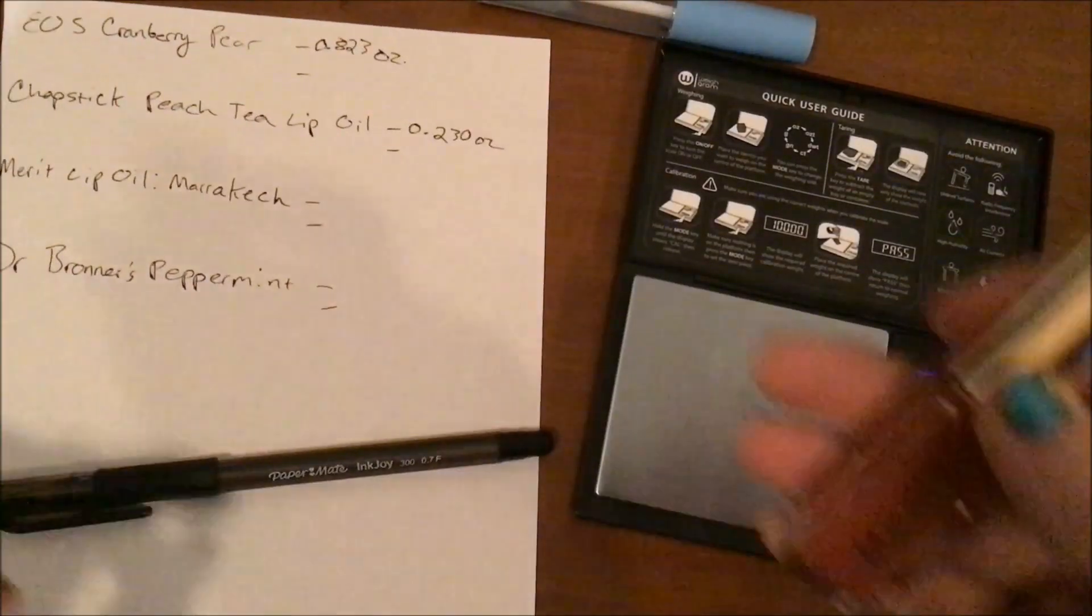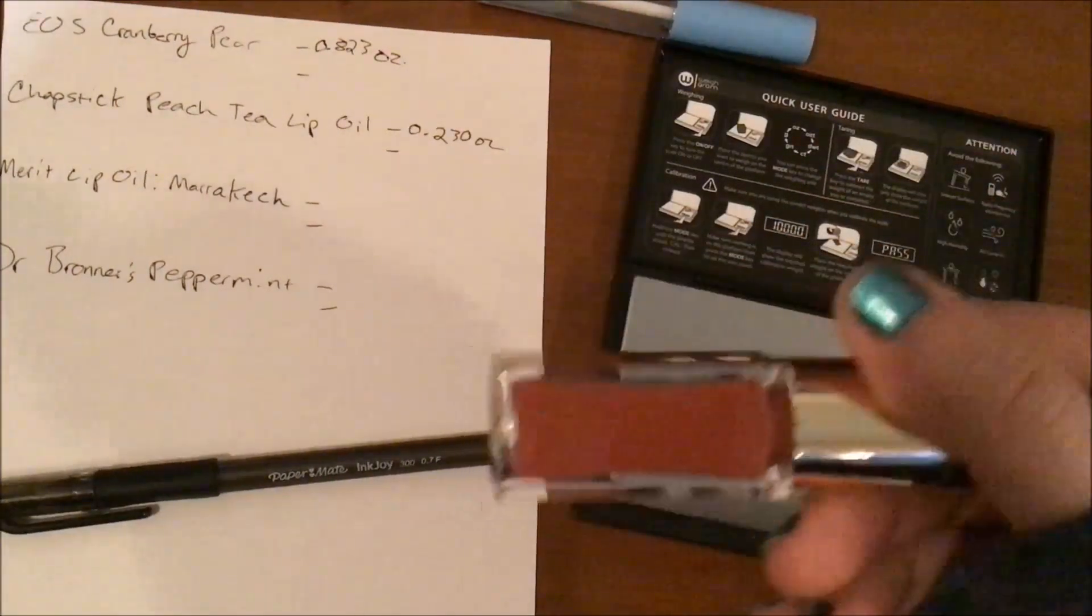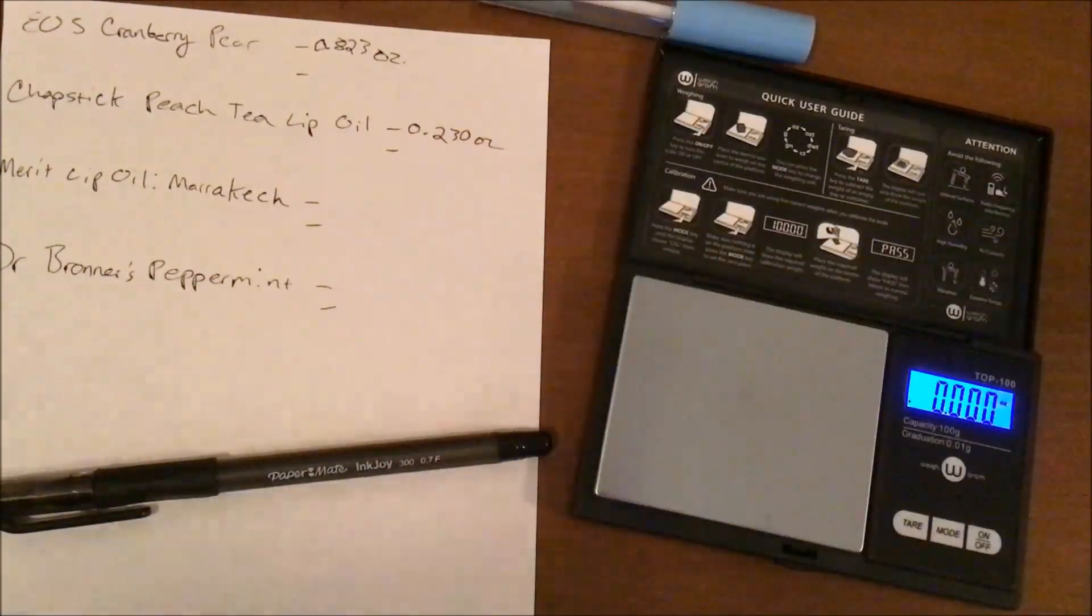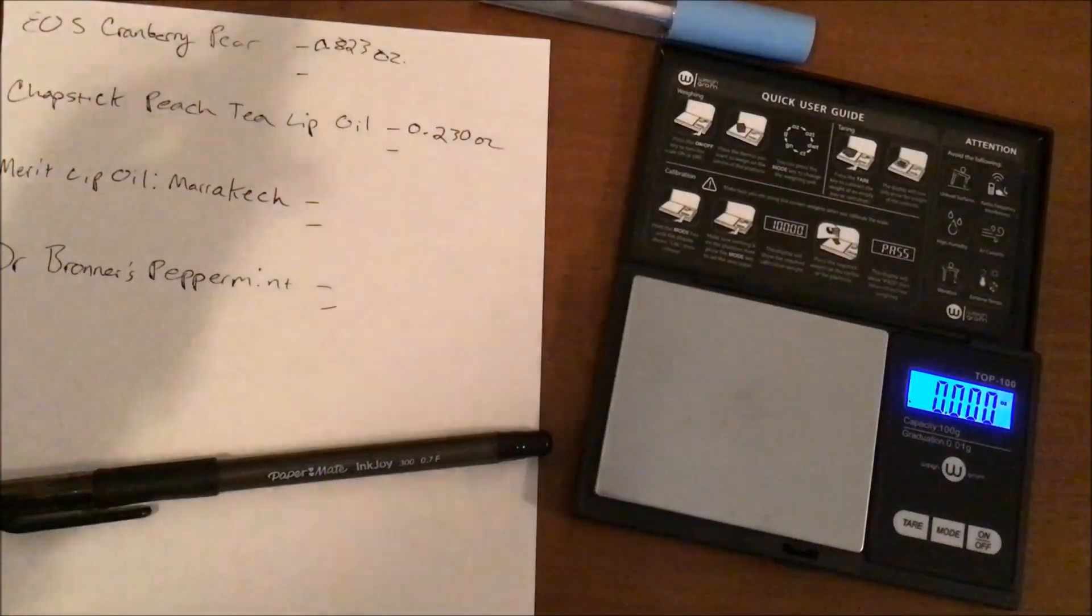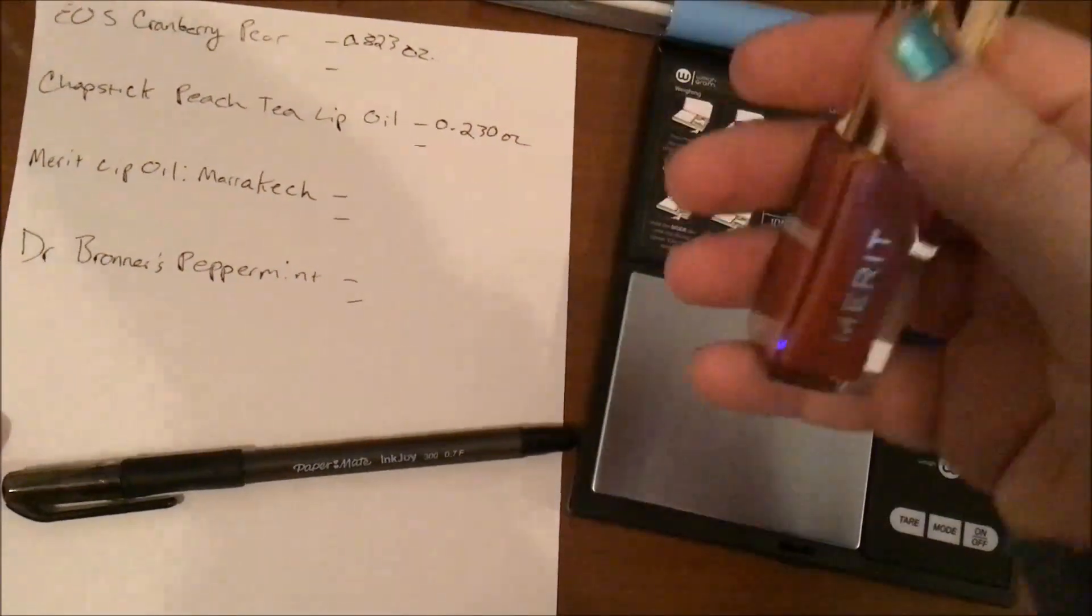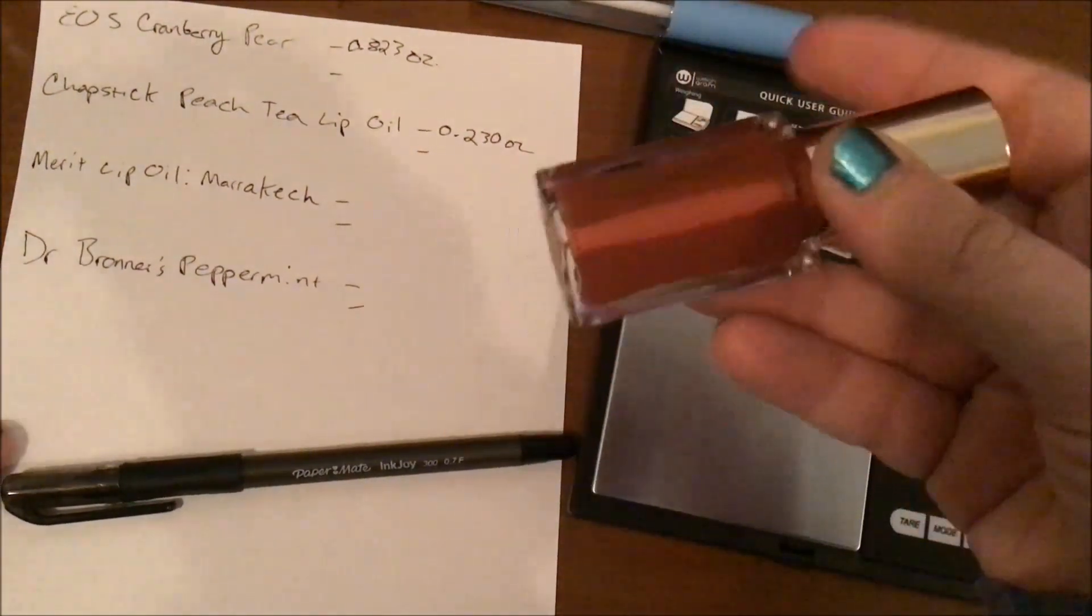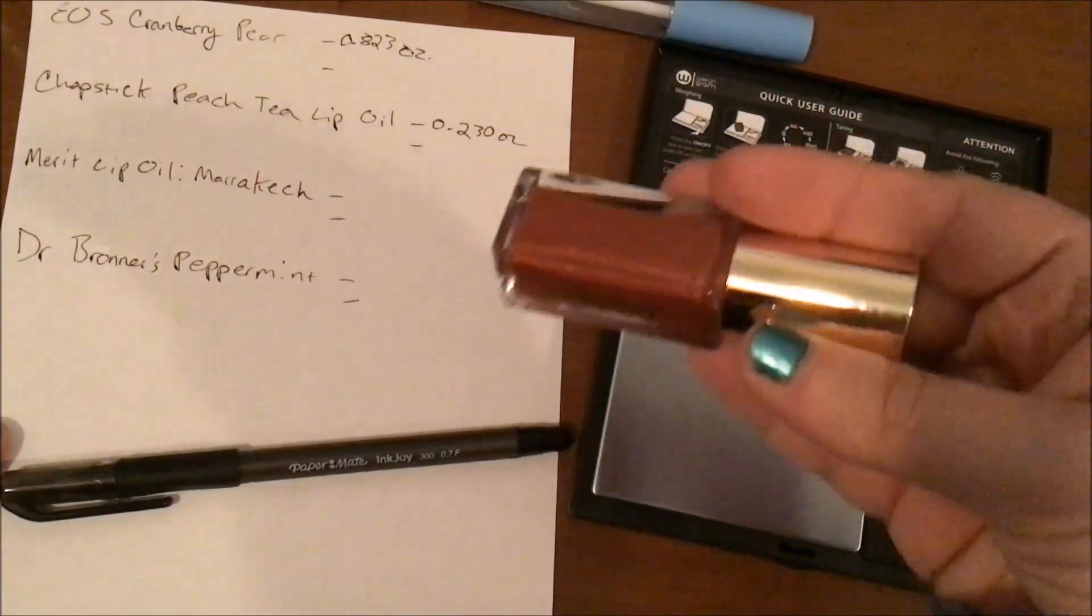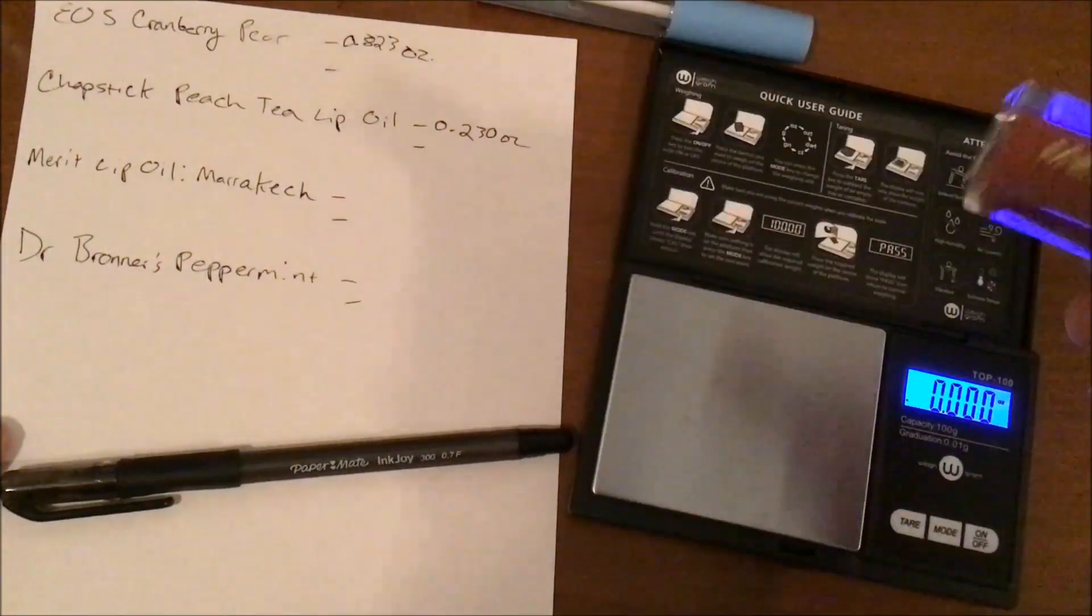Then we have the Merit lip oil in Marrakesh. I think we've only rolled this one in once so far, so it's still basically brand new. Again, this is another one like the Tower 28 where I'm like, I can't remember, did it always smell like this? It's not that it smells bad or anything, I just can't remember if it always smelled the way it does right now. Just in case, let's roll this in, especially since I've seen people in other project pan videos saying that this stuff does go off quickly.